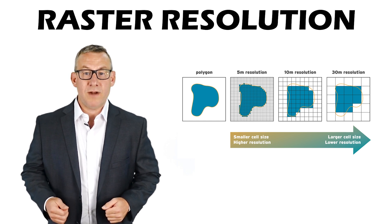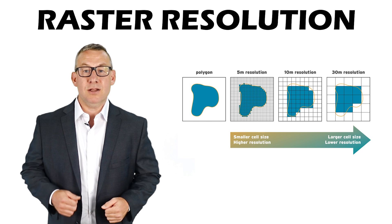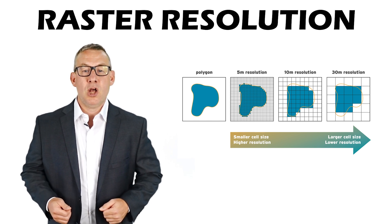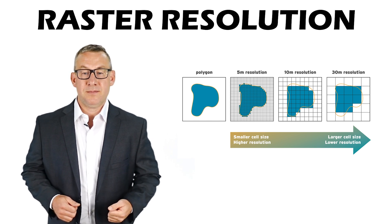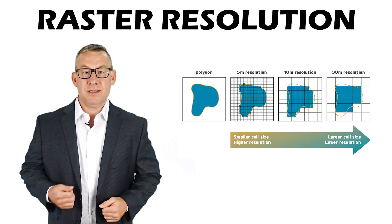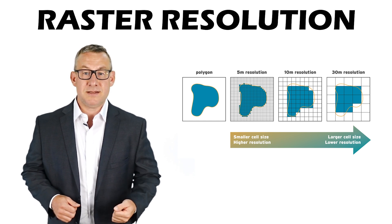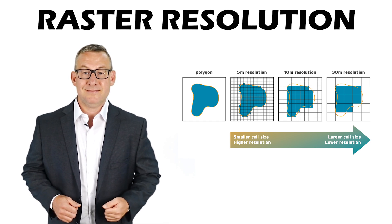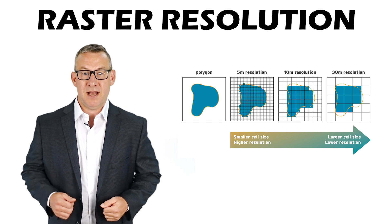Higher raster resolution causes a larger cell size, lower accuracy, faster display speed, faster processing speed, and a smaller file size.